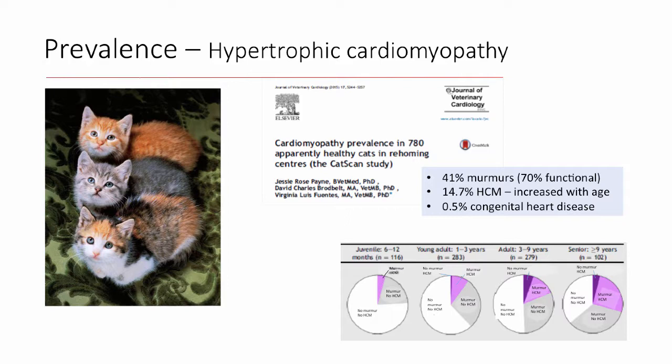This study looked at incidence over time using pie charts for cats from different age groups — 6 to 12 months all the way up to seniors defined as greater than nine years. The white section is no murmur and no HCM, the gray is murmur with no HCM, and the pink is murmur with HCM. As cats got older, the no-HCM no-murmur section gets smaller, the functional murmur section gets bigger, and the HCM section also gets larger with age. So the incidence of HCM and functional murmurs appears to increase with age in cats, at least in this shelter study.